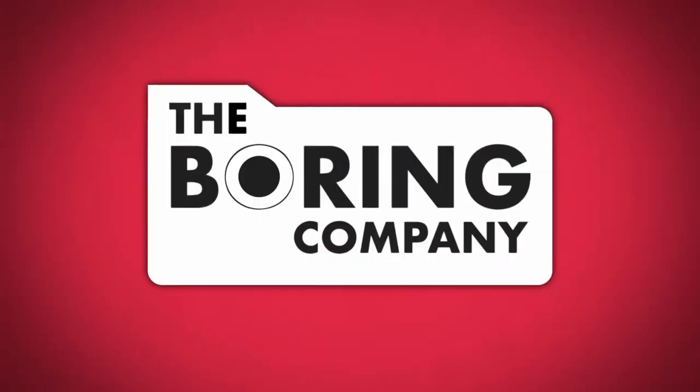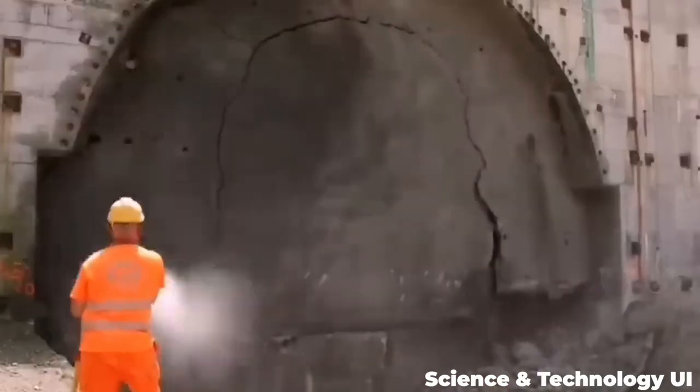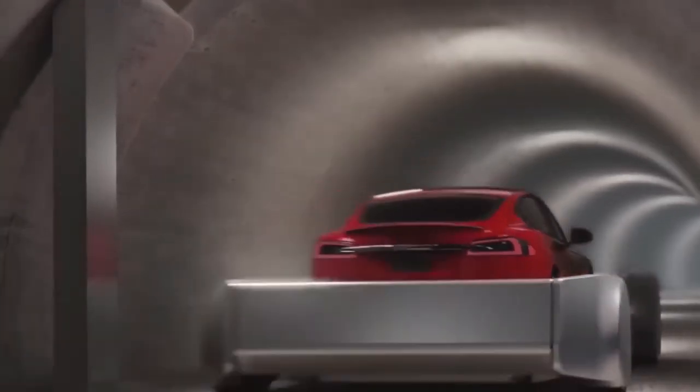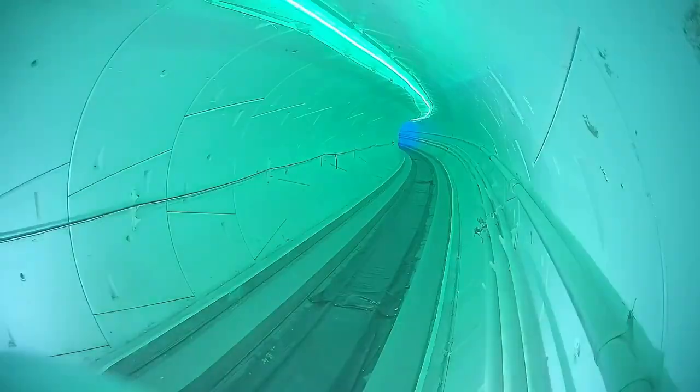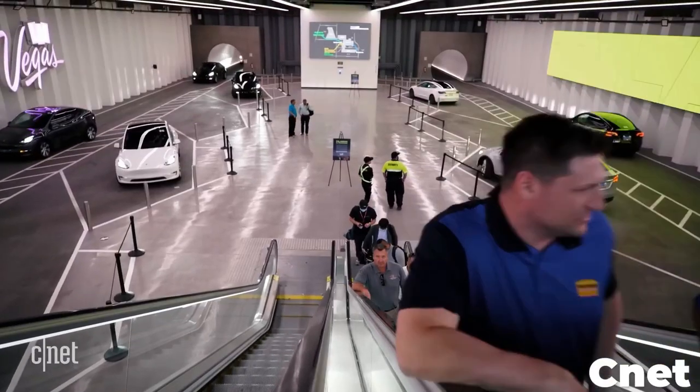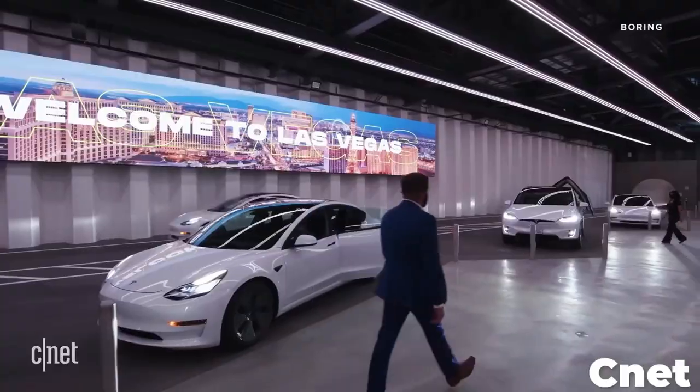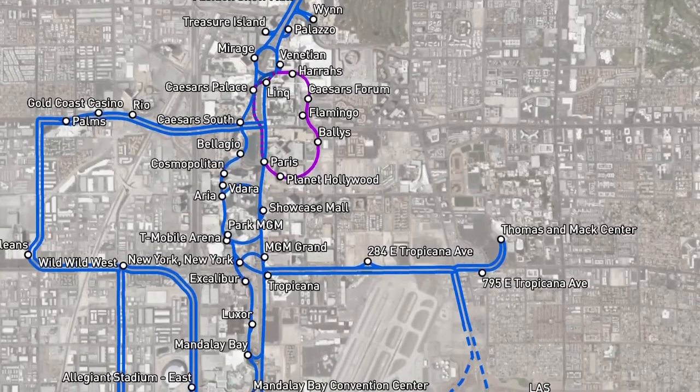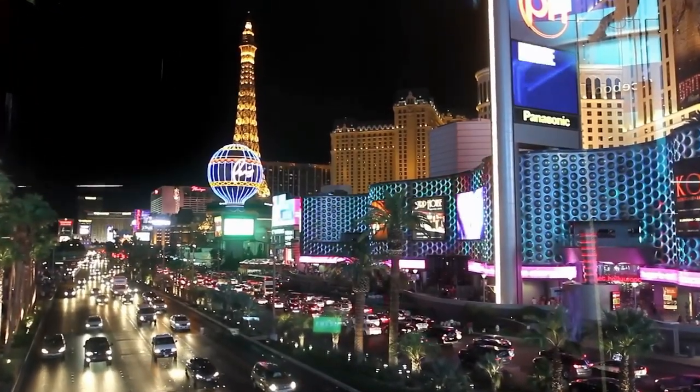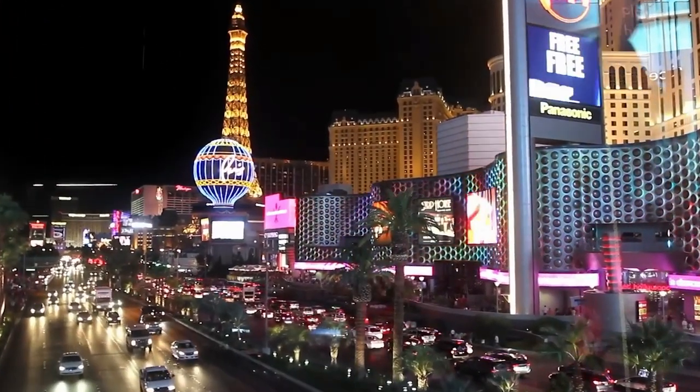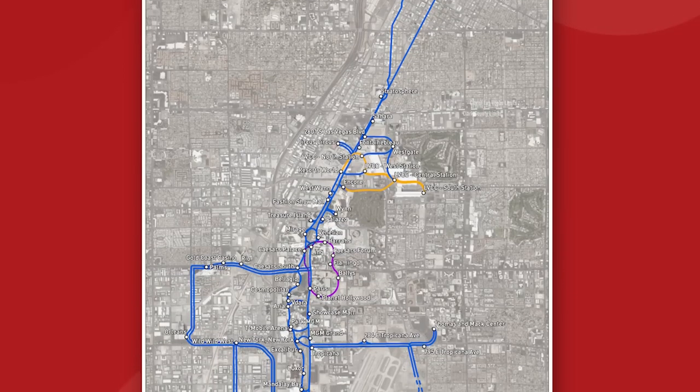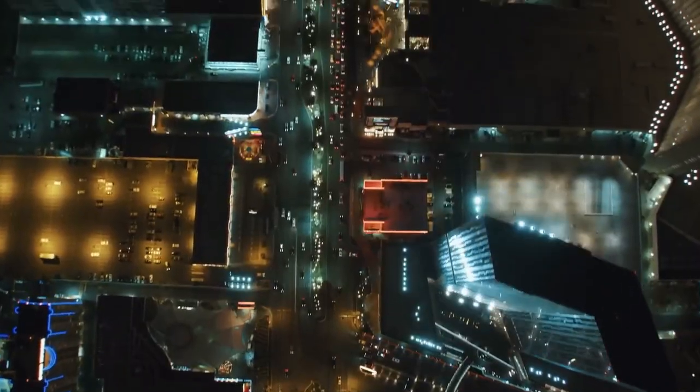7. The Boring Company – Underground Transportation Innovation. In 2016, Musk founded the Boring Company with the goal of addressing traffic congestion in major cities. This groundbreaking invention aims to create a network of underground transportation tunnels, potentially transforming urban mobility and reducing traffic gridlock. Musk's vision for subterranean transportation represents a bold and innovative solution to urban congestion.